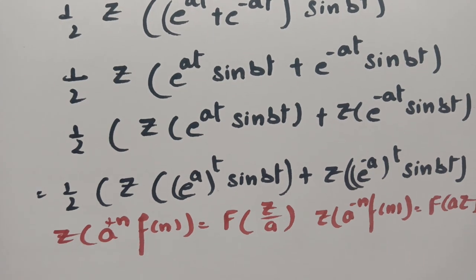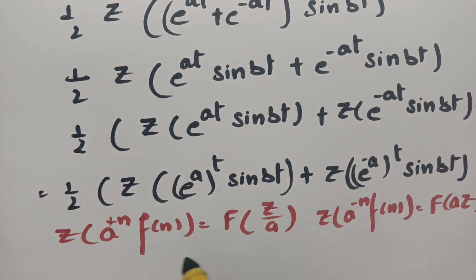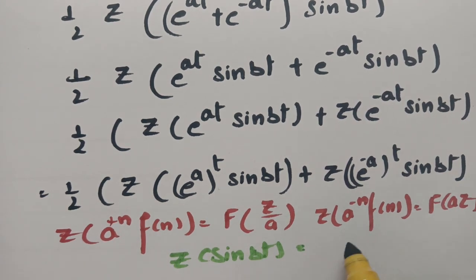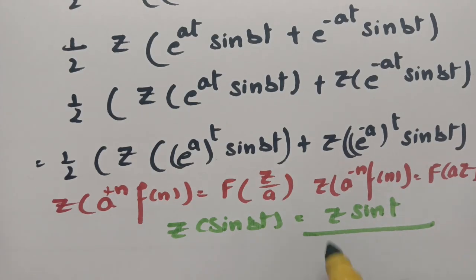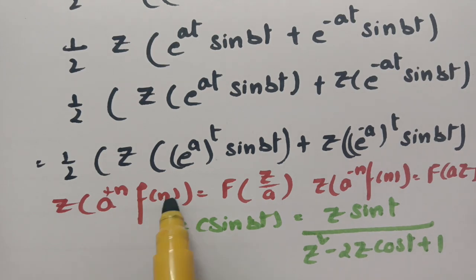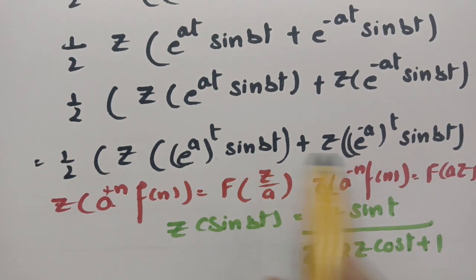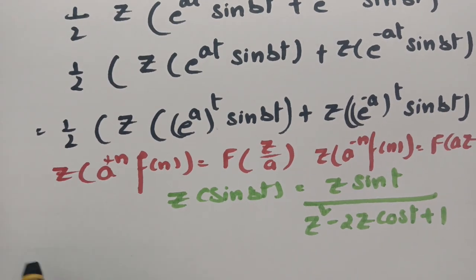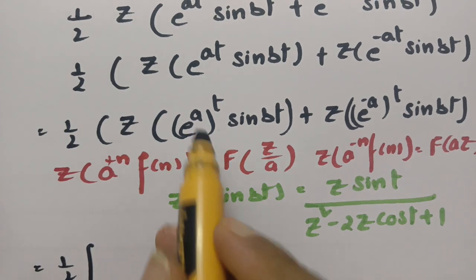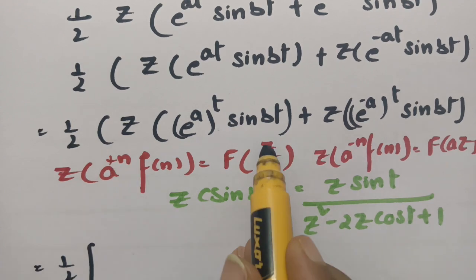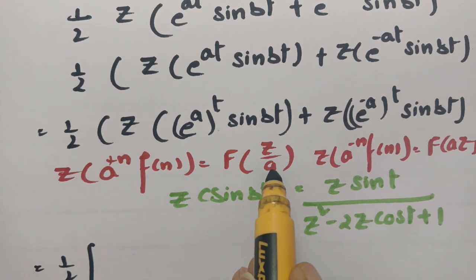We also have that Z of sin(bt) is nothing but Z sin(t) divided by Z square minus 2Z cos(t) plus 1. Using these, I am going to substitute here. In place of a we have e power at and it is a positive value, so if it is positive we have to replace Z by Z by a in sin(bt).